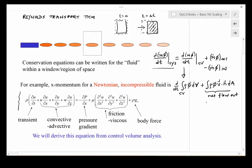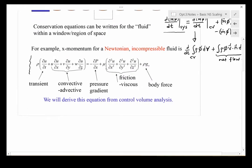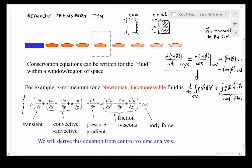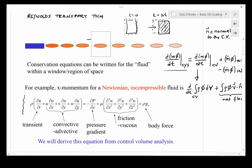V dot n is positive when v and n—n again is the normal to the control volume—so if we have this control volume here, there's a normal that shows up on all surfaces, and the normal is always an outward-pointing vector from the control surface.